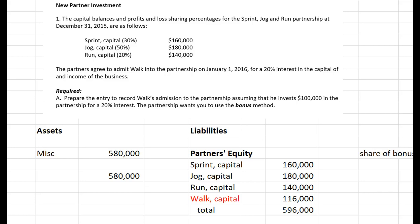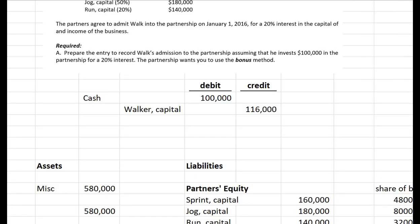So let's figure out how much of the bonus each partner is responsible for. The bonus is $16,000 — the difference between $116,000 and $100,000. Sprint has a 30% profit-sharing ratio, so Sprint's capital account needs to be reduced by $4,800. Jog's account needs to go down by $8,000, and Run's by $3,200. So I need to debit each of those accounts to reduce them.